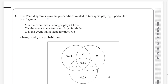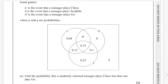The Venn diagram shows the probabilities related to teenagers playing three particular board games. C is the event that a teenager plays chess. S is the event that a teenager plays scrabble. G is the event that a teenager plays go, where P and Q are the probabilities. C is for chess, G for go and S for scrabble.